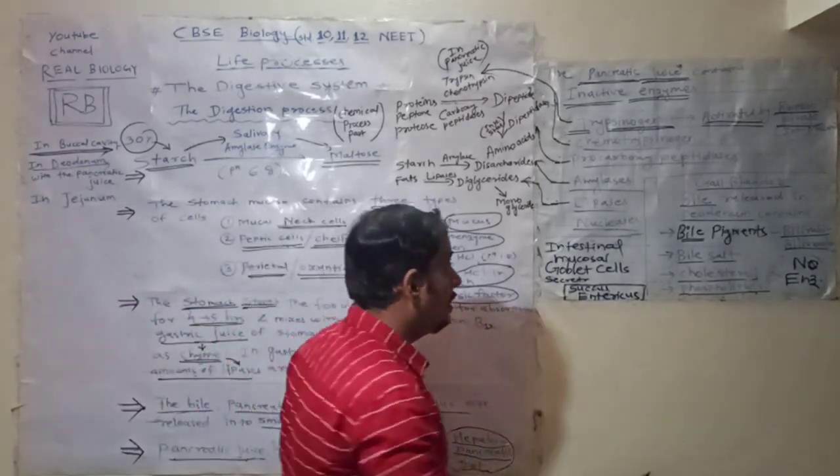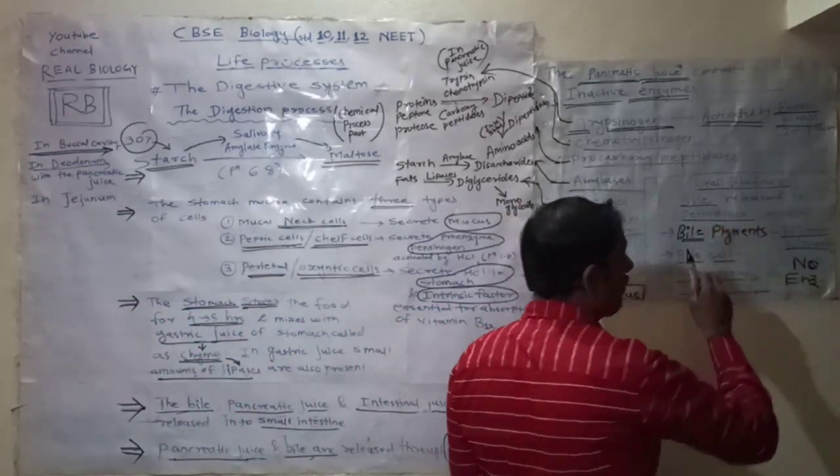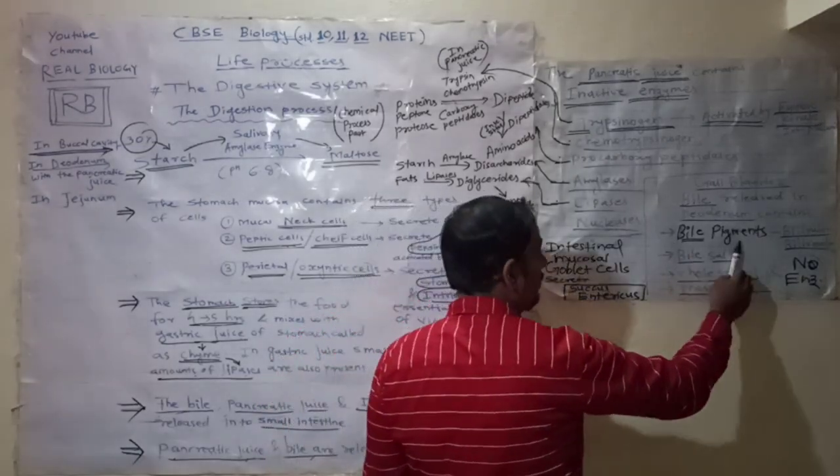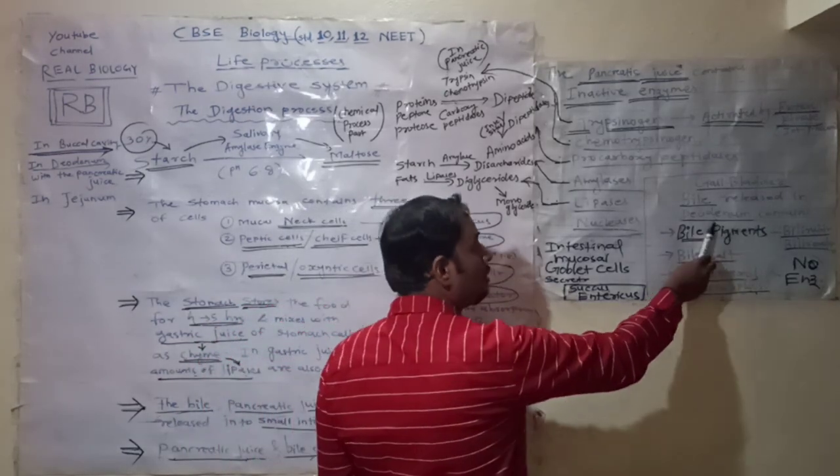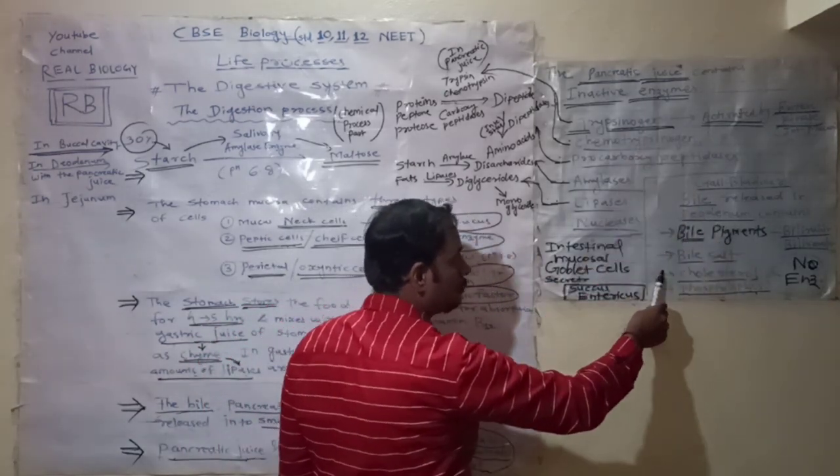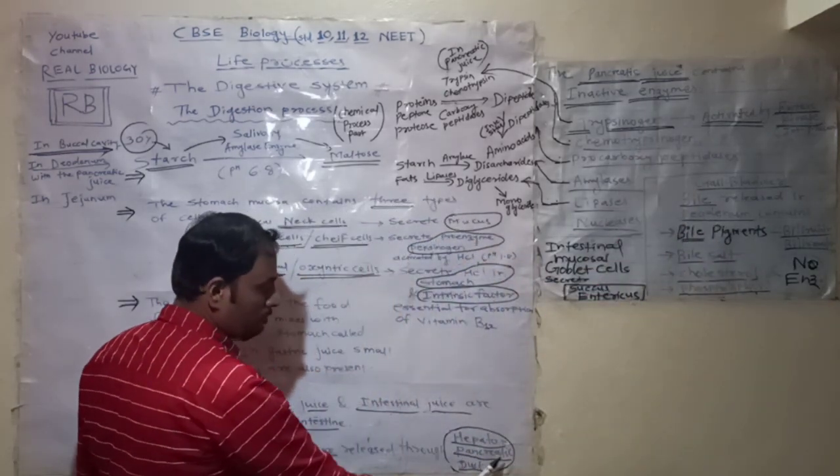In gallbladder secretions of the liver, there are several pigments and several kinds of biochemicals released into the duodenum part along with pancreatic juice through the same duct, the hepatopancreatic duct.